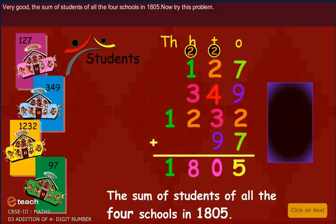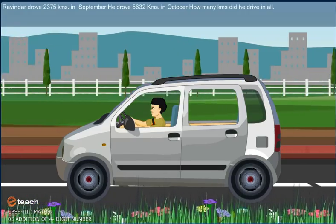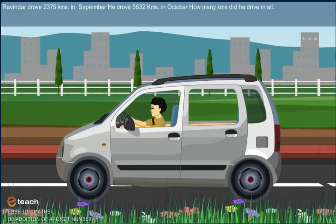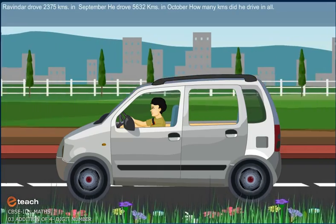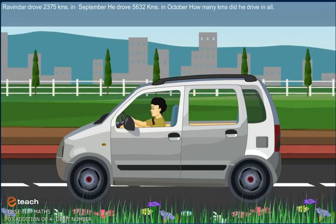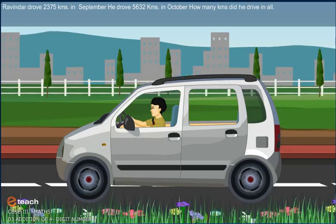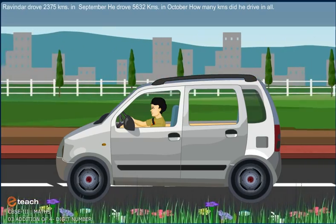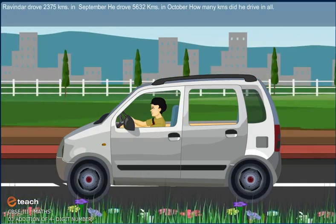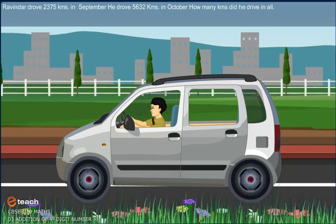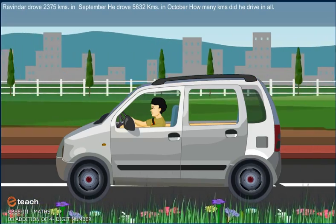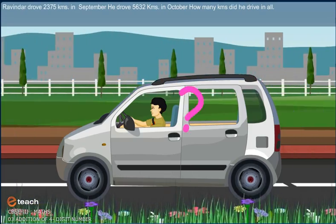Now try this problem. Ravindra drove 2375 kilometers in September. He drove 5632 kilometers in October. How many kilometers did he drive in all?